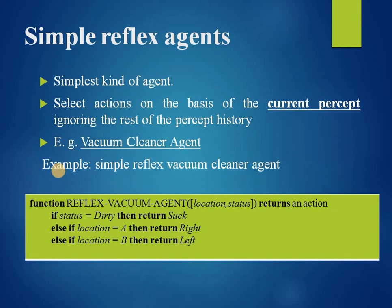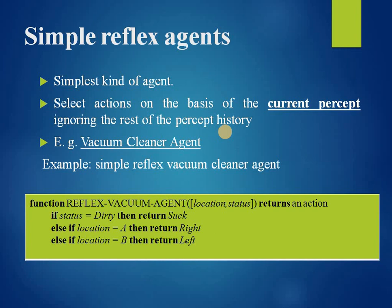A simple reflex agent is the simplest kind of agent. These agents select actions on the basis of the current percept and ignore the rest of the percept history — the action depends only on the current percept. As an example, we consider the vacuum cleaner agent, whose decision is based on the current location and whether that location contains dirt. The vacuum agent program is very small compared to the corresponding table-lookup agent.